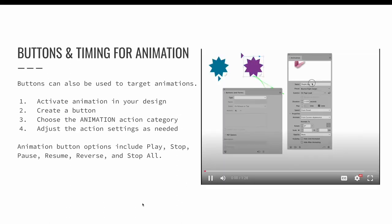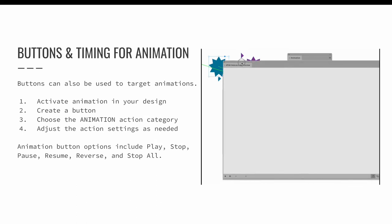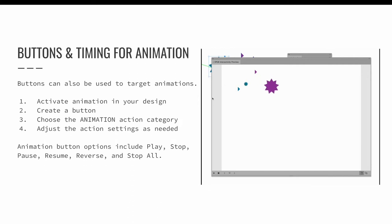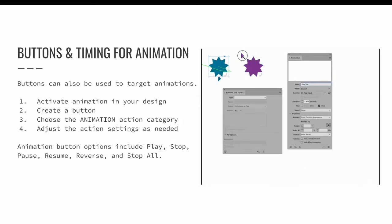Buttons can also be used to target animations. The process is similar to using buttons when targeting audio and video — it's basically the same anytime you want to use a button to target something else in your design. Make that something else first. We will activate animation somewhere in the layout. I recommend giving your animation, multi-state object, or audio or video a name that is distinct and recognizable.